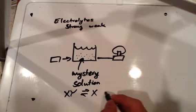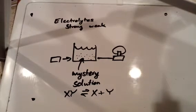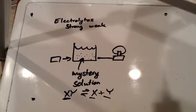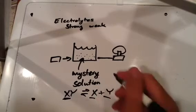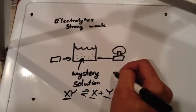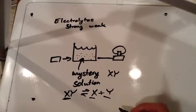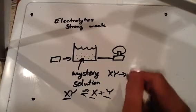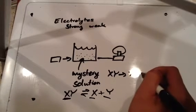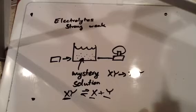For example, if you have XY turning into X and Y over here, what you're really seeing is that not all of this XY solution is turning into X ions and Y ions. Instead, some of them are XY, some of them are X, and some of them are Y. And in the case of a strong electrolyte, though, if I had some kind of XY here, I'm going to draw one arrow that points in one direction. It's just going to break up into its constituent ions.